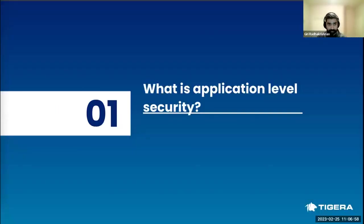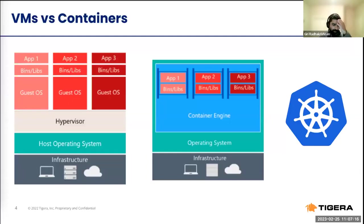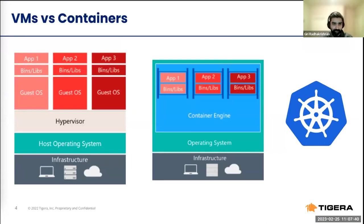We'll start with application-level security and the basics of what the application layer and the OSI model are. But before that, since we are dealing with containers and Kubernetes today, I want to give a very brief introduction to containers. I'm not sure how many people are familiar with it, but let's look, on a very high level, at what containers are. I'm sure most of you are familiar with VMs and virtual machines. But what's the deal about containers? People talk about Docker, containers, Kubernetes — so what do these things mean?